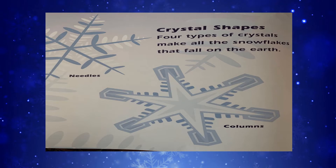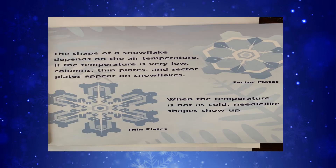Crystal shapes. Four types of crystals make all the snowflakes that fall on the earth: needles, columns, thin plates, and sector plates. The shape of a snowflake depends on the air temperature. If the temperature is very low, columns, thin plates, and sector plates appear on the snowflakes. When the temperature is not as cold, needle-like shapes show up.